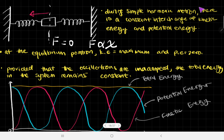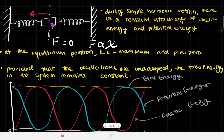So we can now look at these key statements. During simple harmonic motion, there is a constant interchange of kinetic energy and potential energy. At the equilibrium position, kinetic energy is at a maximum and potential energy is zero, as we've just seen, because maximum velocity is at the equilibrium position. Provided that the oscillations are undamped — which we'll talk about in the next video — the total energy in the system will remain constant.